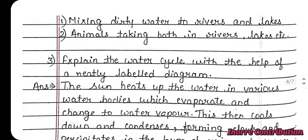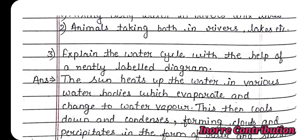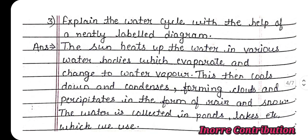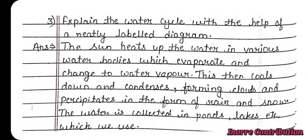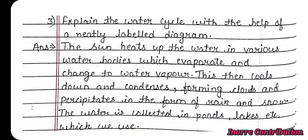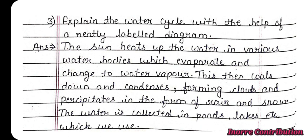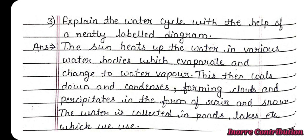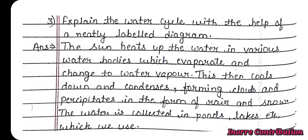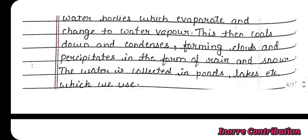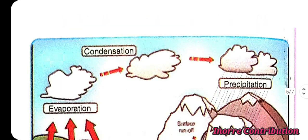Third question: Explain the water cycle with the help of a neatly labelled diagram. Answer — the sun heats up the water in various water bodies, which evaporates and changes to water vapour. This then cools down and condenses, forming clouds, and precipitates in the form of rain and snow. The water is collected in ponds, lakes, etc., which we use. Here is the labelled diagram.